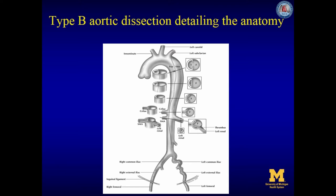The dissection flap distal to this shows evidence of collapse of the true lumen with dynamic obstruction of the celiac and superior mesenteric arteries. The dissection does not extend into these vessels but occludes them by intermittent obstruction of the flap during the cardiac cycle. In contrast, the left renal artery shows evidence of dissection without reentry in the course of the branch vessel. In this branch, there is formation of thrombus in the left renal artery false lumen, which causes a static obstruction and renal malperfusion.